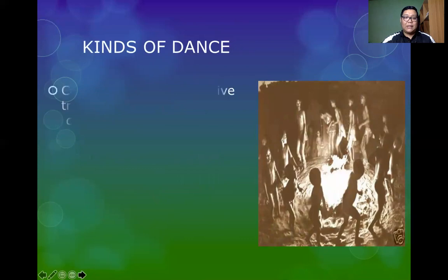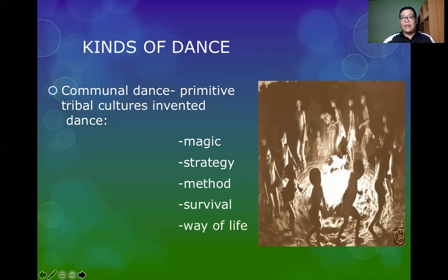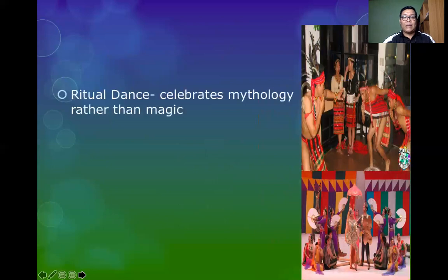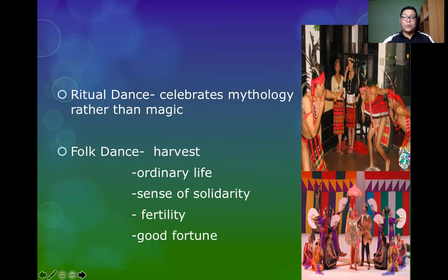There are different kinds of dance. Communal dance is primitive and traditionally done by indigenous communities, invented for the purpose of magic, strategy, survival, and to represent their way of life. Ritual dance is practiced by ethnic or tribal groups to celebrate their deities and worship their gods and goddesses. Folk dance is to celebrate festivities or harvest, representing the community's ordinary life, sense of solidarity, fertility, good fortune, and wealth.